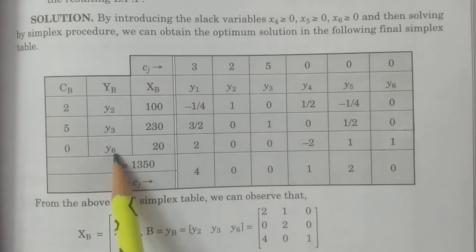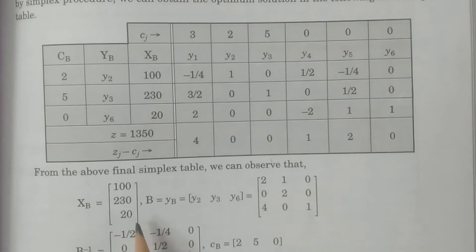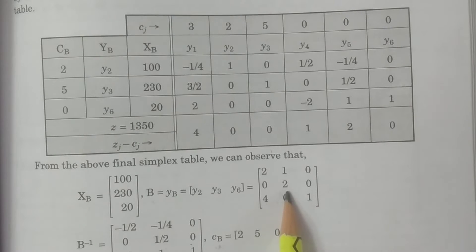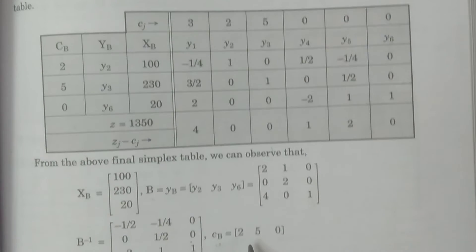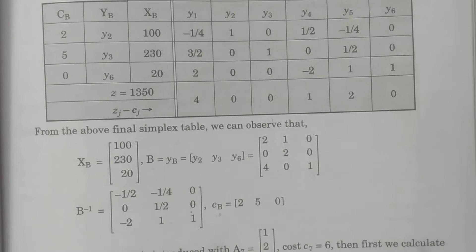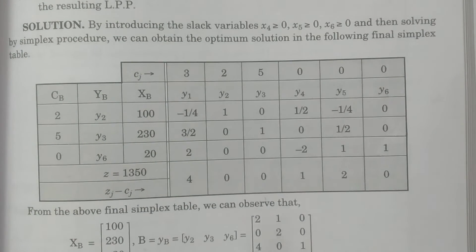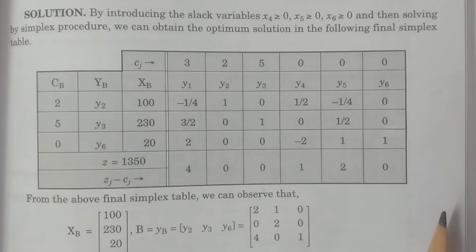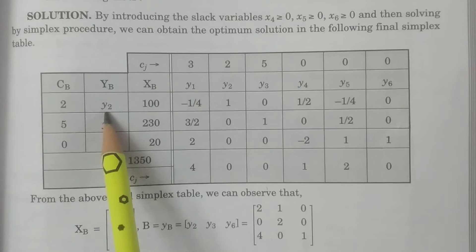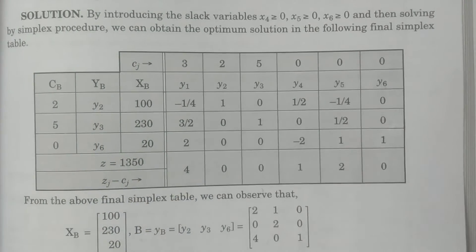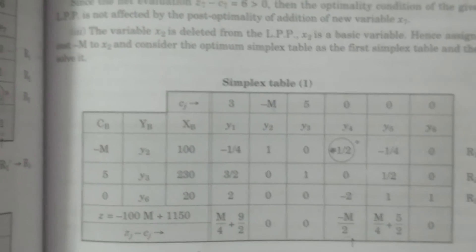Z equals this value; y2, y3, y6 are in the basis, and xb is given. You can observe here: capital B is this; from the given LPP this is B-inverse, this is cB. Now, by taking this, since x2 is the variable being deleted, we have to first observe whether x2 is a basic variable or a non-basic variable. The vector corresponding to x2 is y2, and y2 is in the basis. Therefore, x2 is a basic variable.